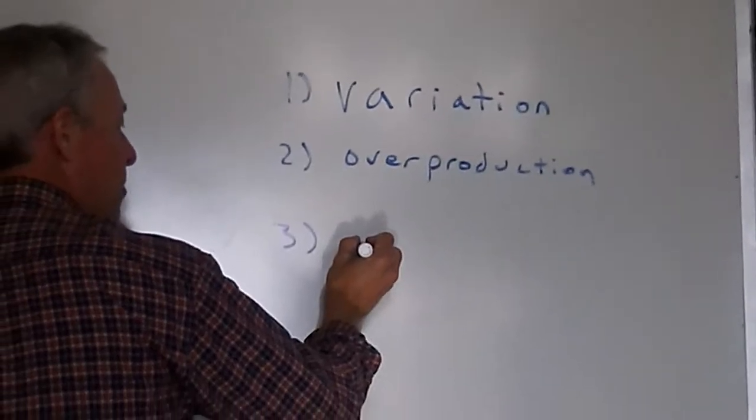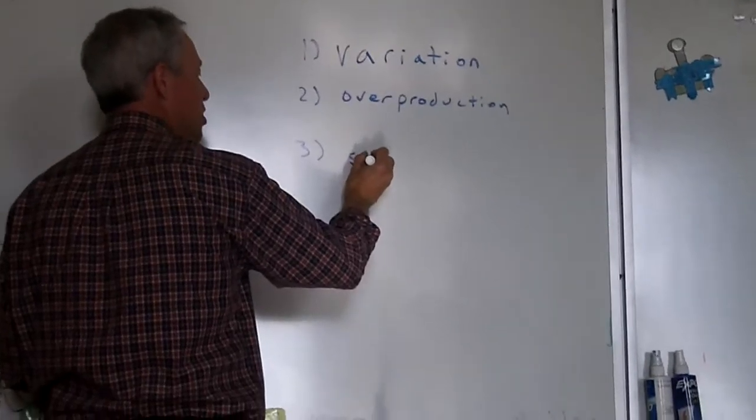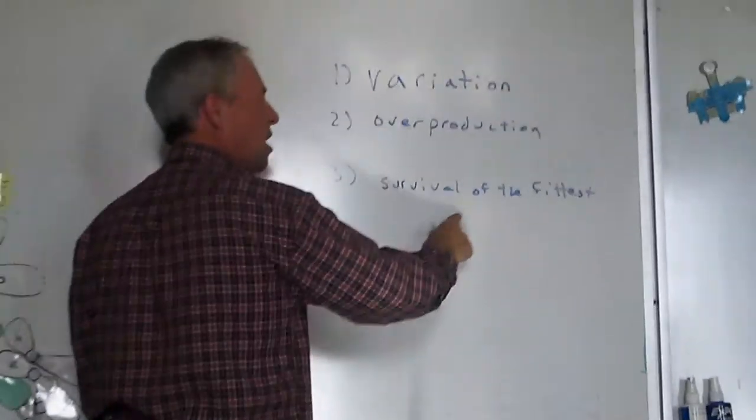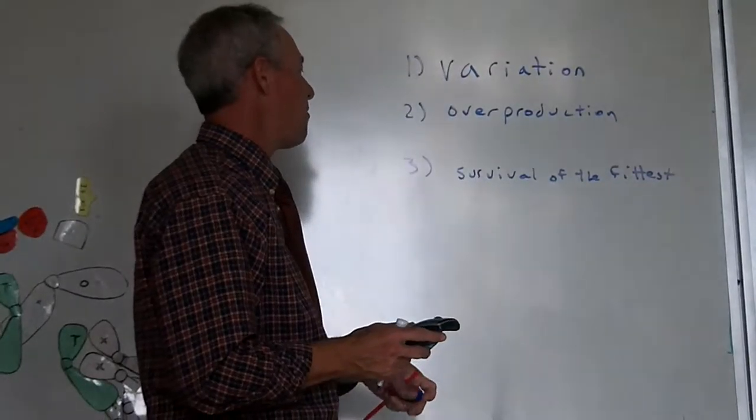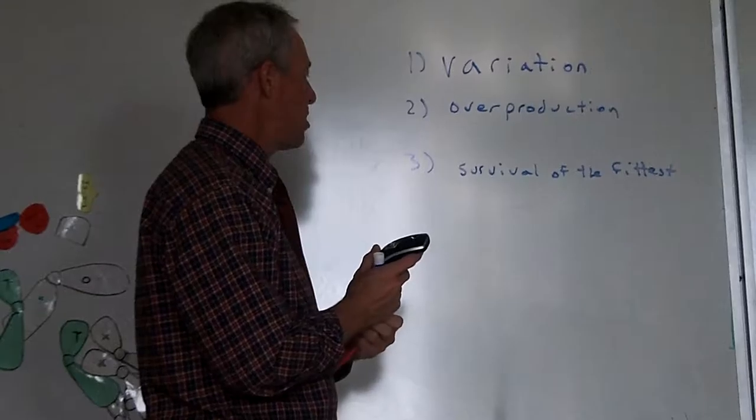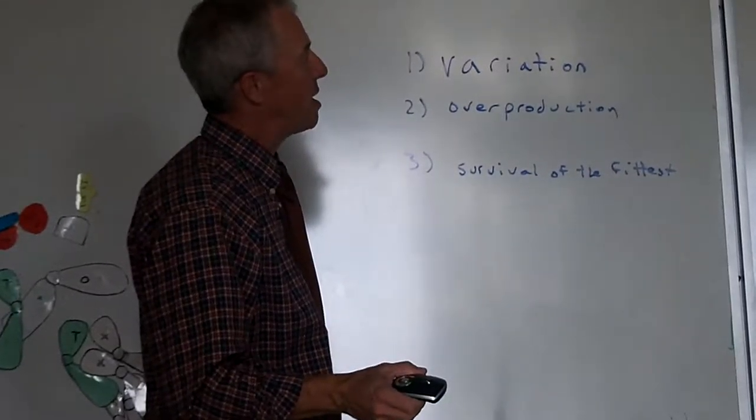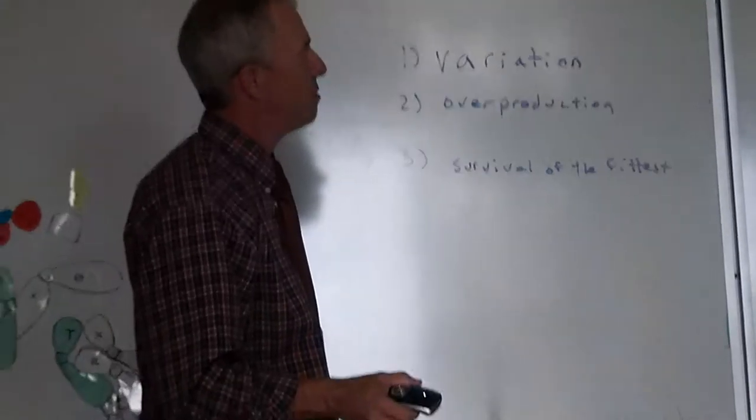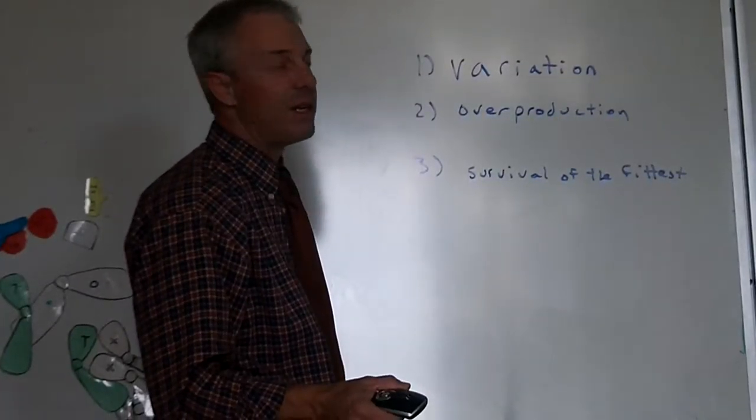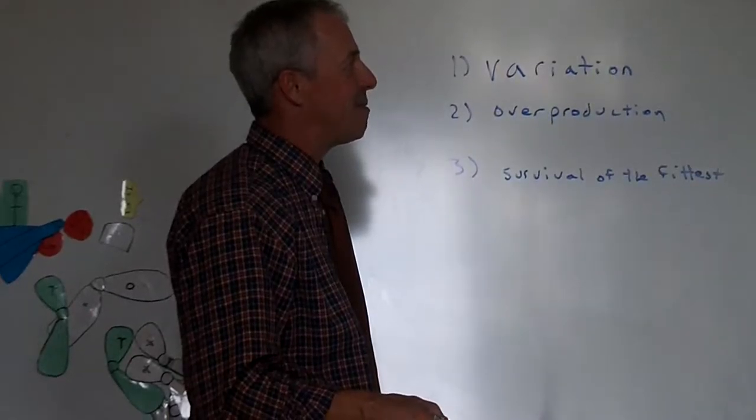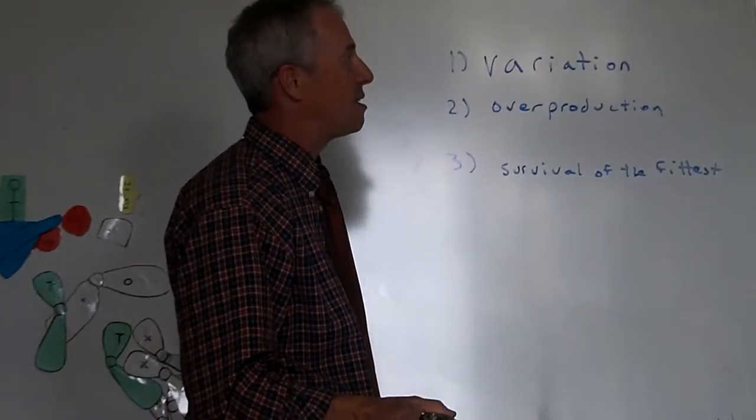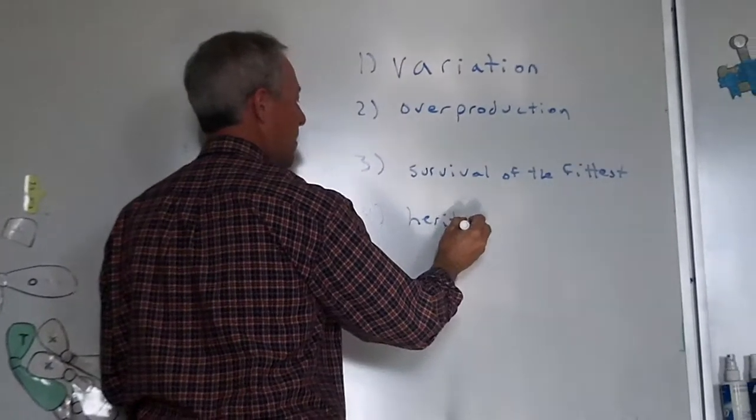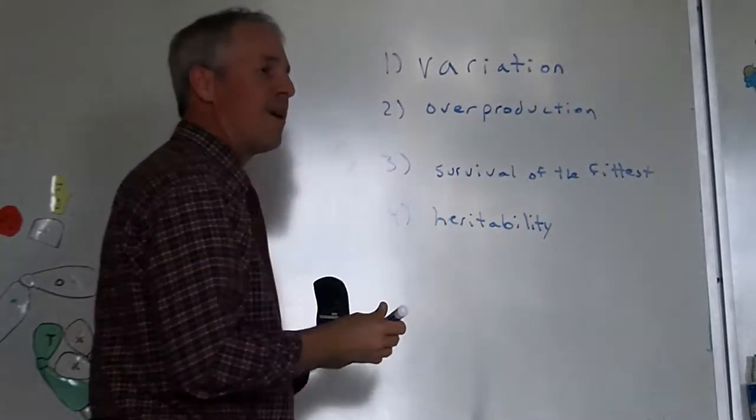And survival of the fittest being the third thing. What did we call it yesterday? Differential survival? Yep. That's where the ones who have the best traits for surviving live, and the ones who have the worst traits die out. That's what you're seeing in this example with the X's. The light ones don't survive very well. And so all that's left is the dark ones. And they will have kids, and their kids tend to be dark, too, just like their parents.